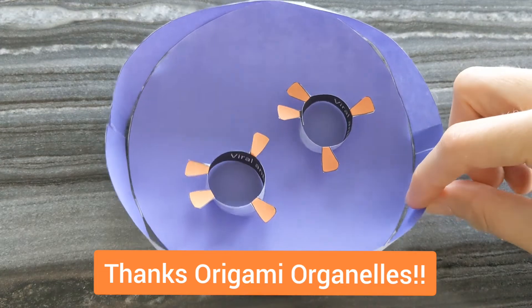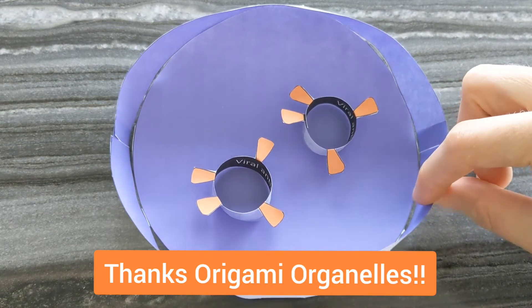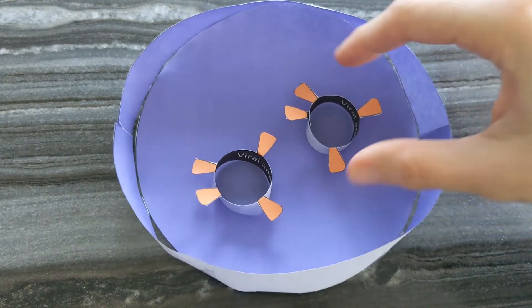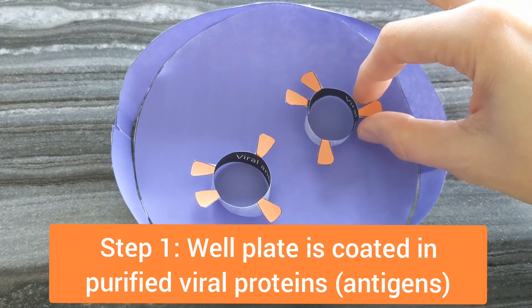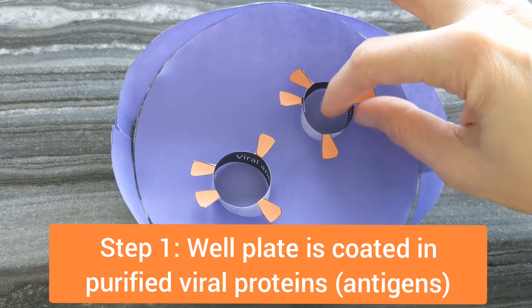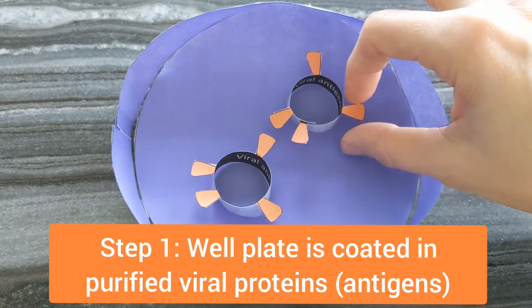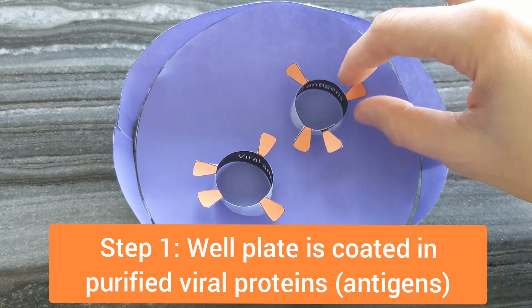In the very first step you have well plates represented by the purple, and some protein from the COVID-19 pathogen is bound to the plate. This represents those proteins. They're also known as the viral antigens.